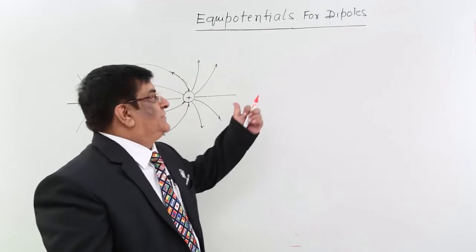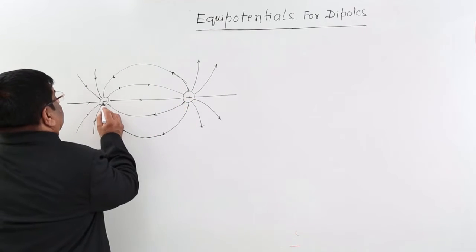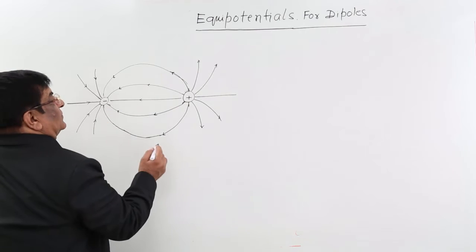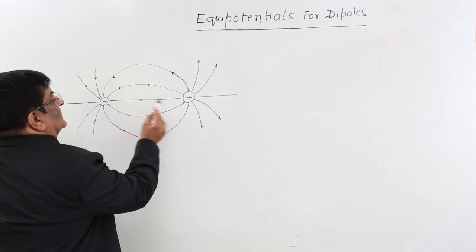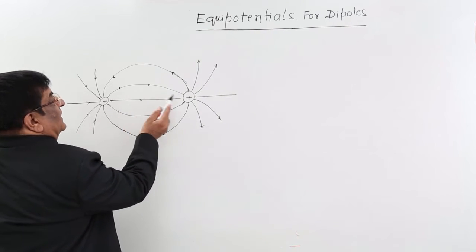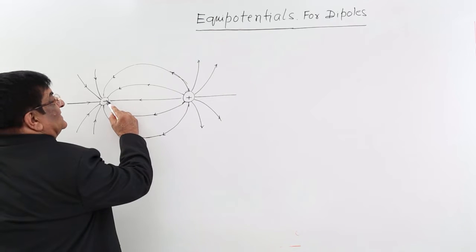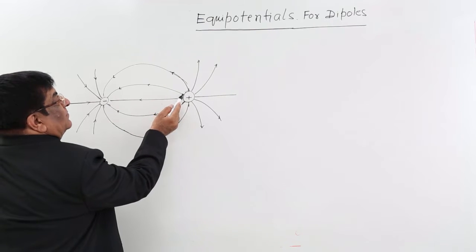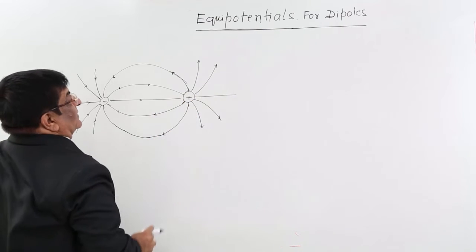Equipotentials for Dipoles. This is minus Q and this is plus Q. First we draw electric field lines — these are the electric field lines starting from plus going to minus, and when they come out from the surface, as we had discussed, they must be perpendicular.